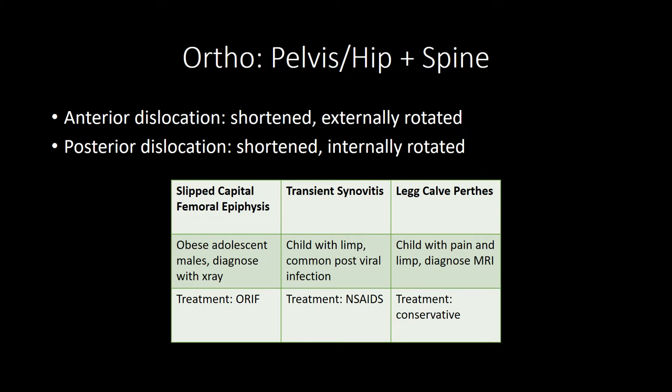An open book fracture presents with a widened pubic symphysis, typically from anterior-posterior compression or crush injury. Treatment is angiography with embolization and surgical fixation; place a pelvic binder at the level of the greater trochanters. For hip fractures, the leg is often externally rotated and shortened. Femoral neck fractures carry a high risk of avascular necrosis, whereas lesser trochanter fractures are most common in young adults due to forceful contraction of the iliopsoas.